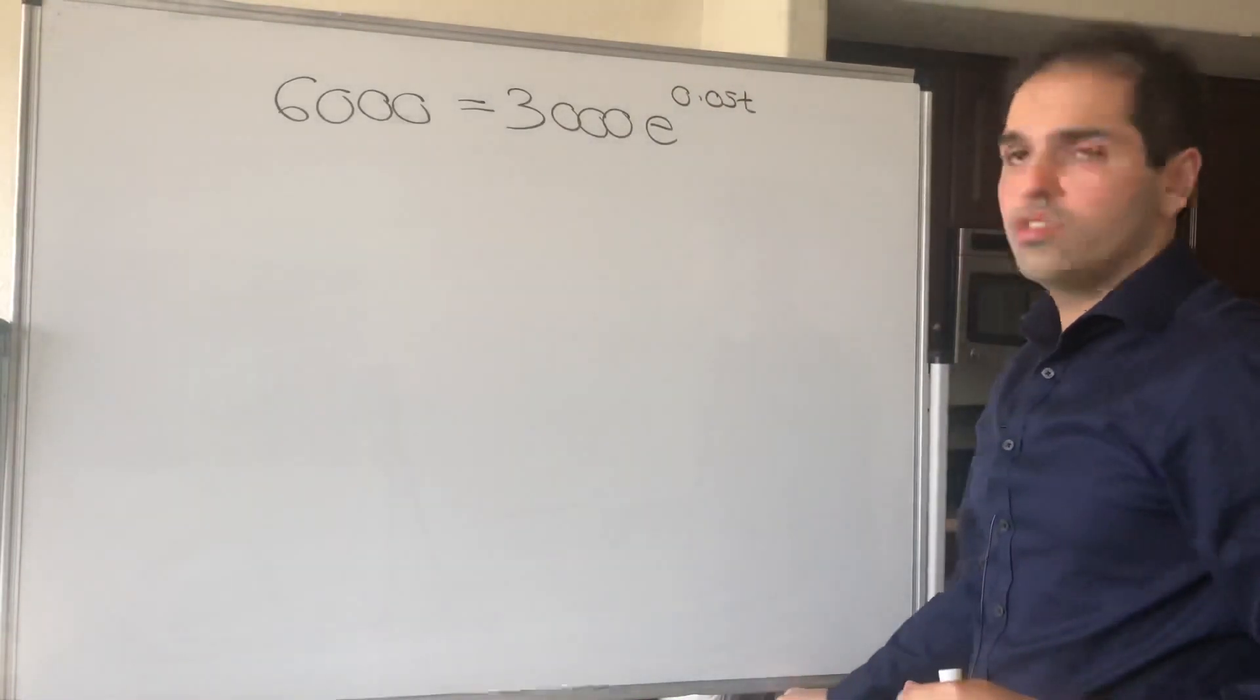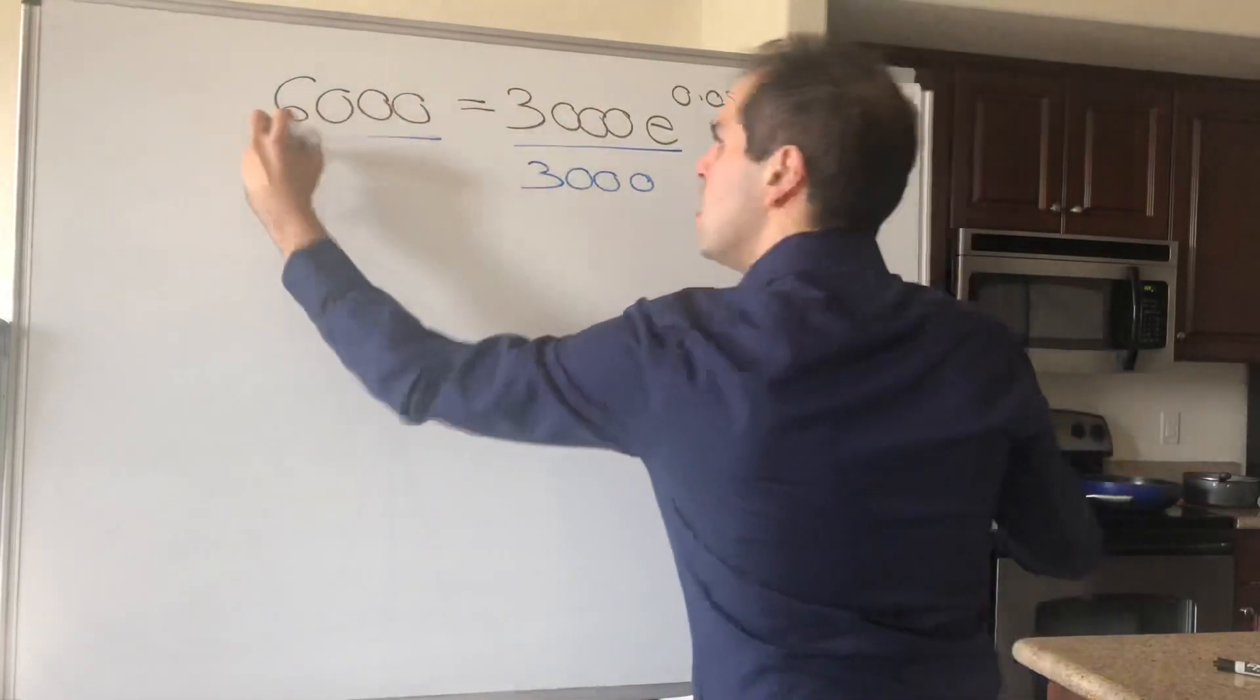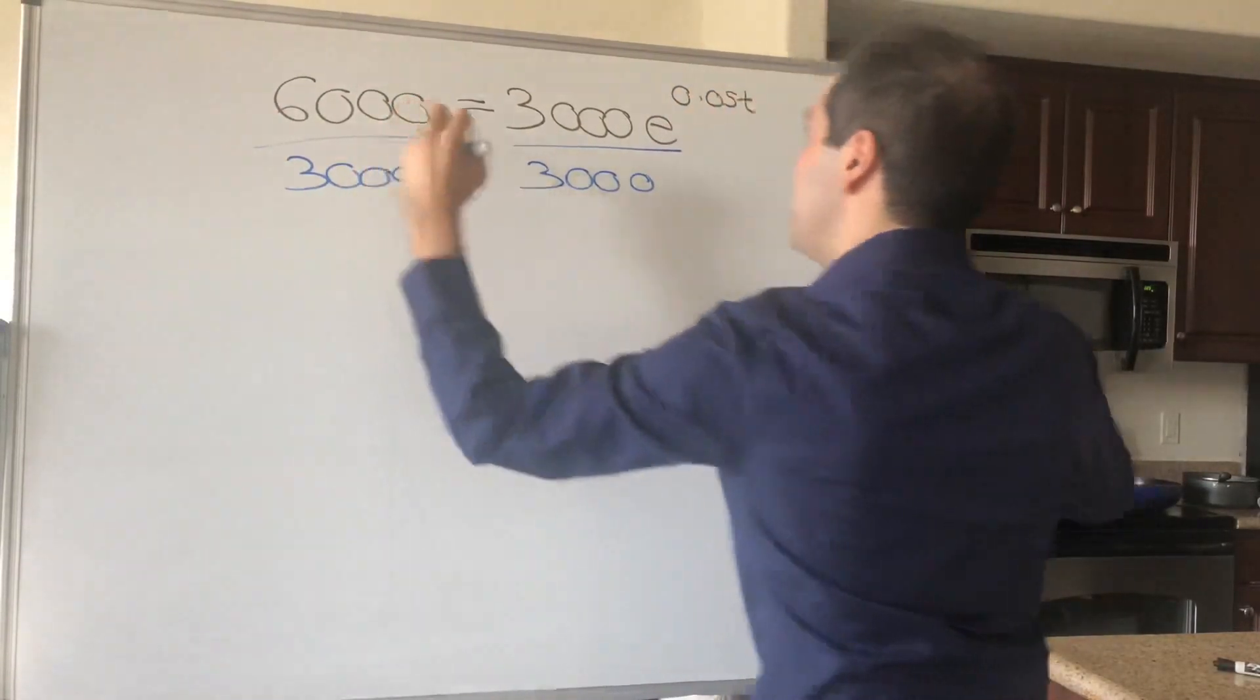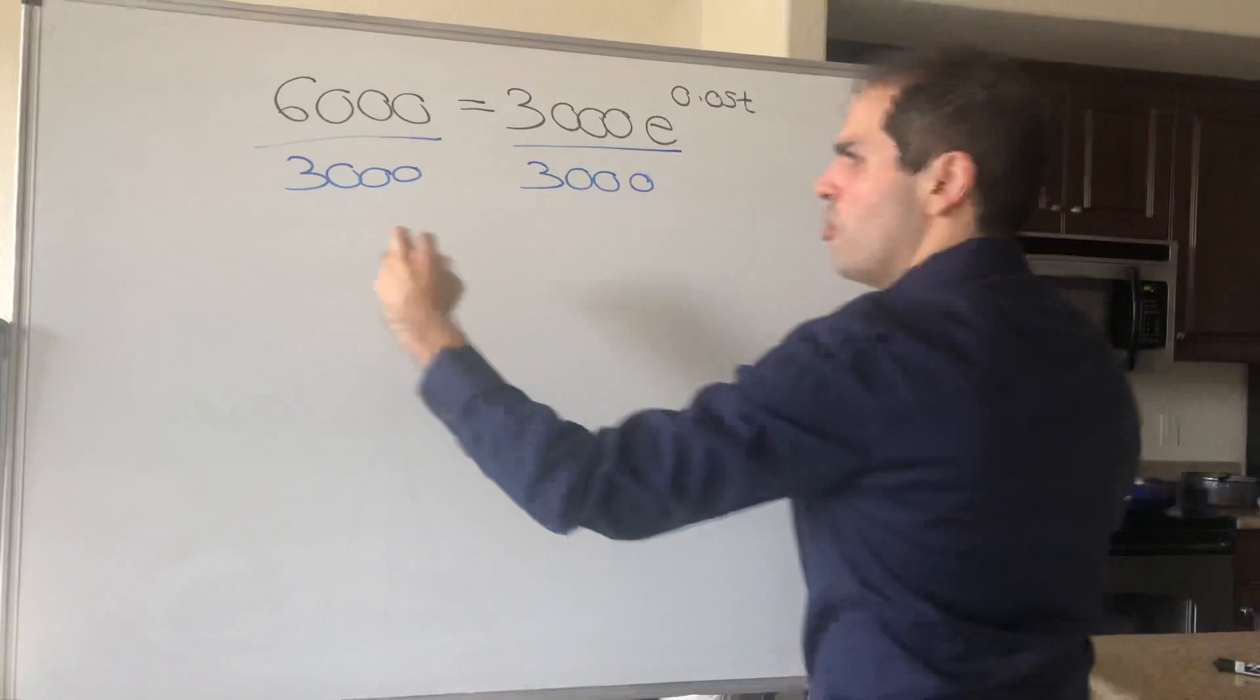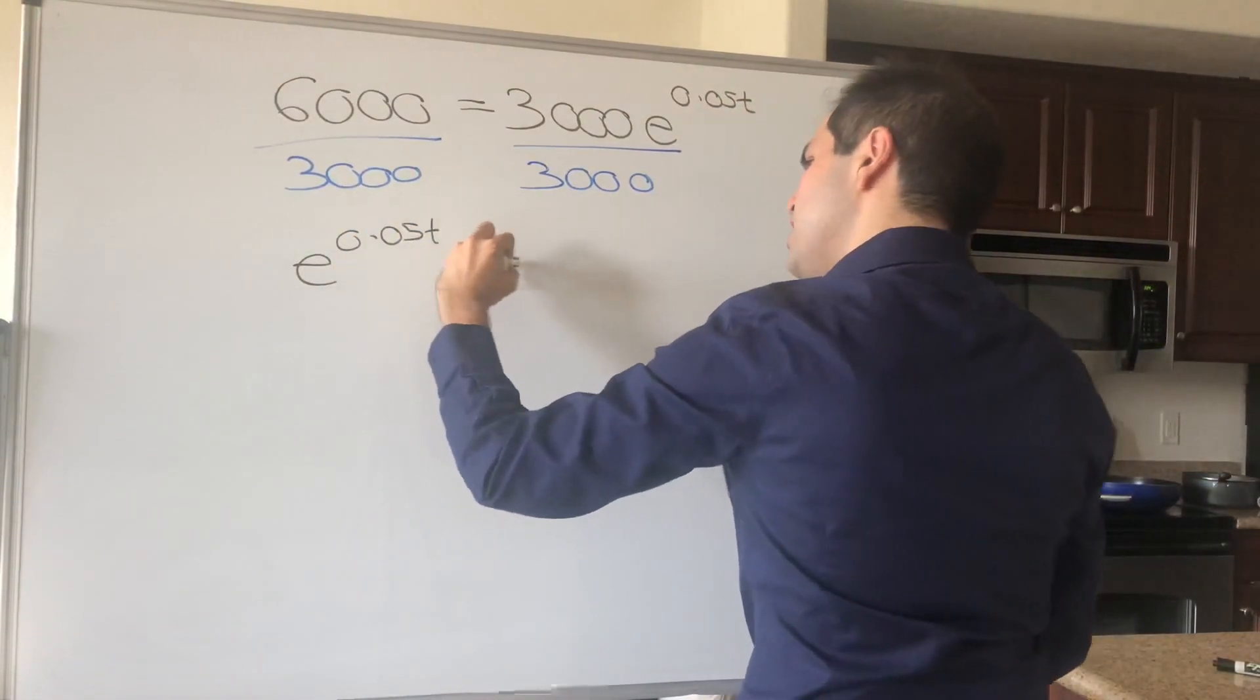And then to solve this, first of all, we divide by 3,000 to basically get E to the 0.05T equals 2.